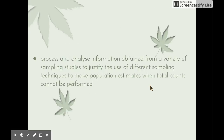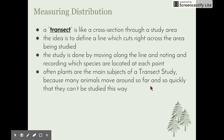The next dot point is to process and analyse information obtained from a variety of sampling studies to justify the use of different sampling techniques to make population estimates when total counts cannot be performed. When out in the ecosystem looking at the distribution of organisms, we use a transect — a cross-section through a study area. The idea is to define a line cutting across the area, using a string line or marker sticks. Moving along the line, you note and record which species are located at each point. Often plants are the main subjects of transect studies because many animals move too quickly to be studied this way.